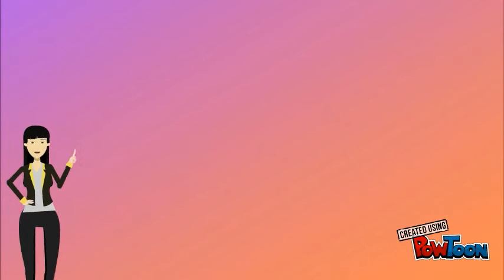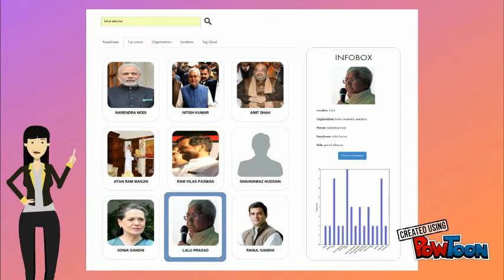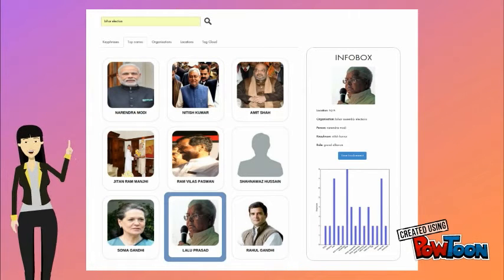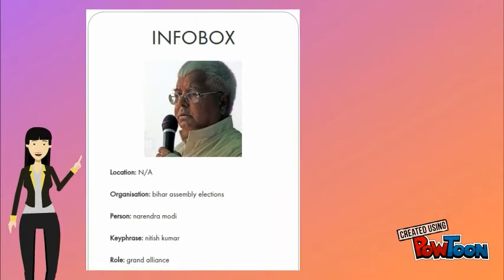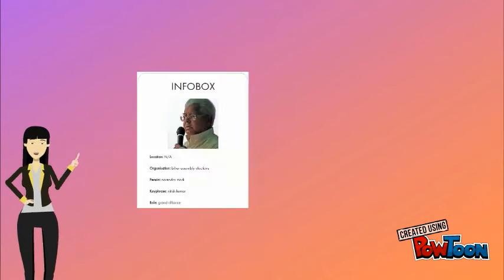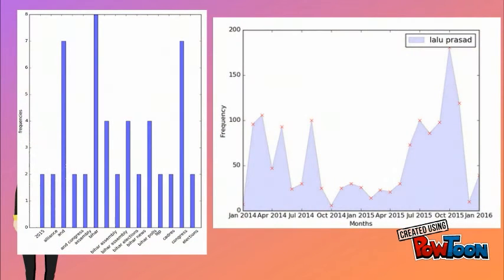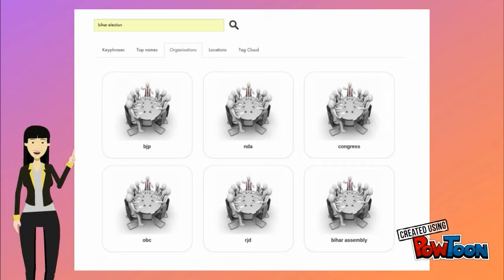The next tab, Top Names, shows names arranged in decreasing order of their participation, along with an info box on the right displaying important connections, role played, concepts, and temporal activity of the selected person.